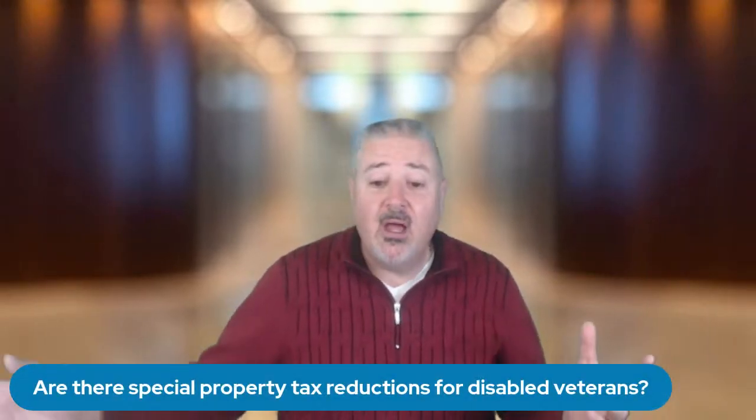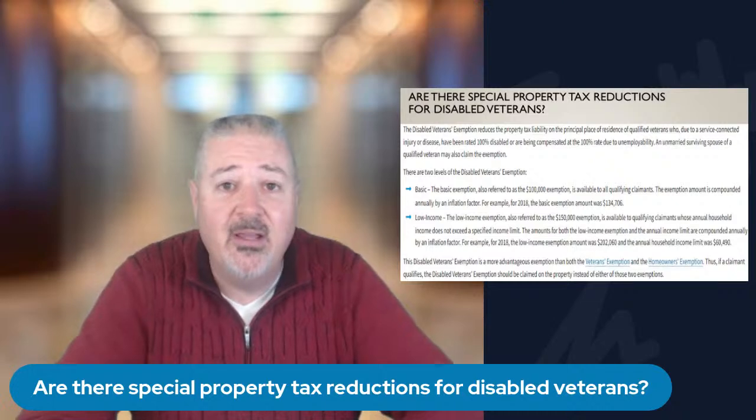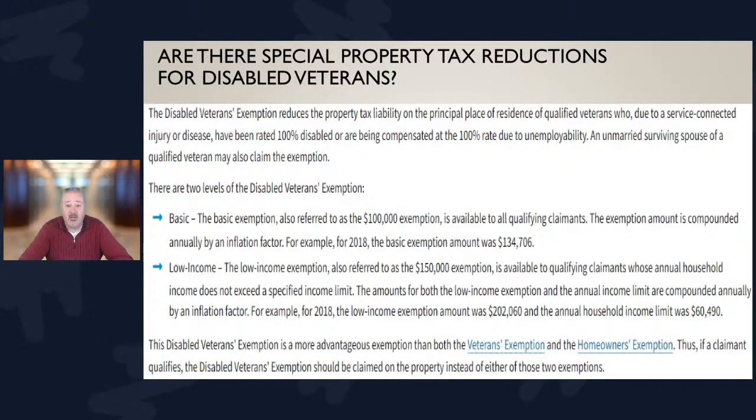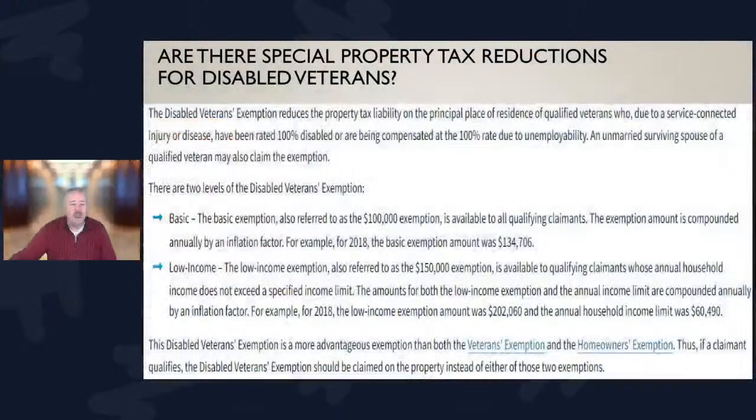Speaking of exemptions, there is a very big exemption for disabled veterans. The exemption — whether the homeowner's exemption or the disabled veteran exemption — is applied after you purchase the home, so I cannot take it into account when pre-approving you. The disabled veteran exemption can make a huge difference in property taxes, yet I cannot set up your mortgage payment based on what taxes will be after the exemption, because there's no way to guarantee eligibility before closing.